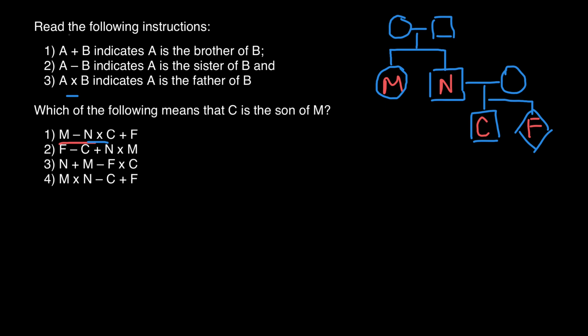Returning to our question — which of the following means C is a son of M — we see that C is a son of N, and N is a brother of M. So for C, M is going to be an aunt. C is clearly not a son of M. So let's check the second variant.